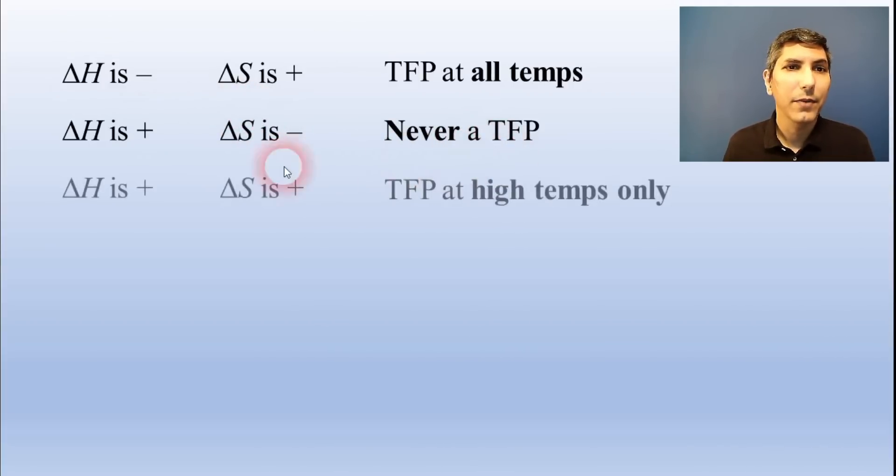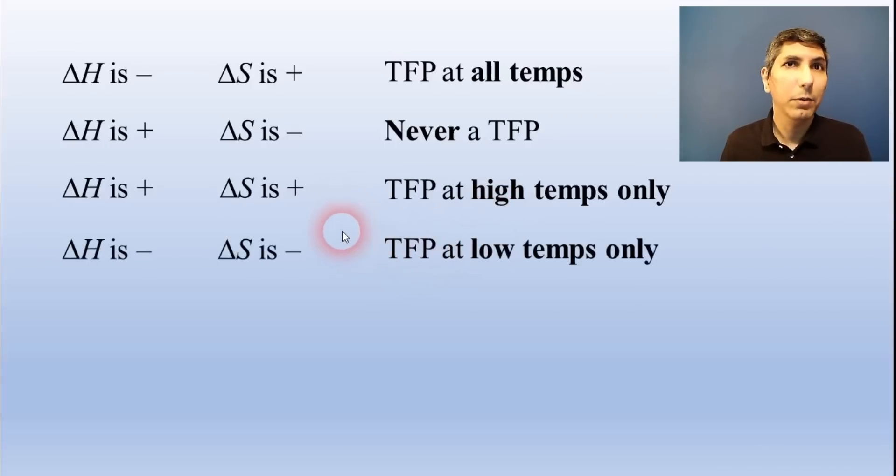If a reaction has a positive delta H and a positive delta S, then it'll be favored only at very positive temperatures, high temperatures. Likewise, if a reaction has a negative delta H and a negative delta S, it will be thermodynamically favored only at lower temperatures.